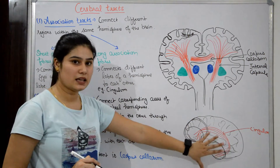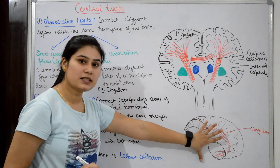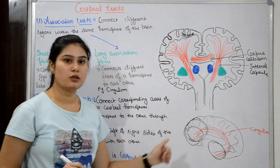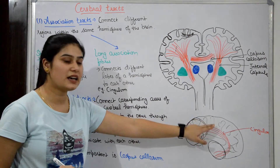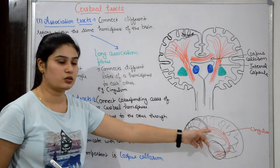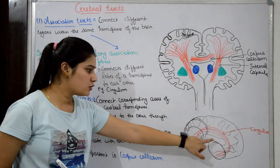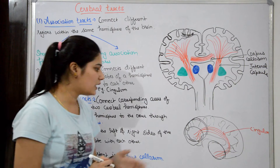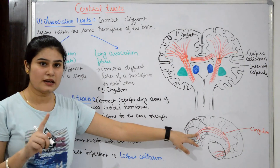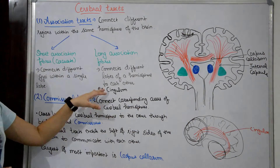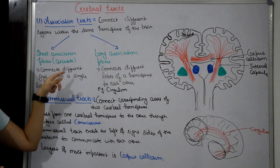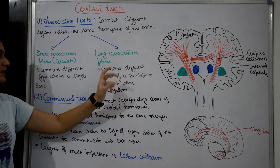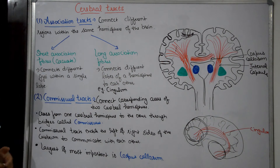The cingulum connects within one hemisphere — for example, in the right cerebral hemisphere, it connects the frontal lobe to the temporal lobe. This is a long association fiber. Now, what is the commissural track?